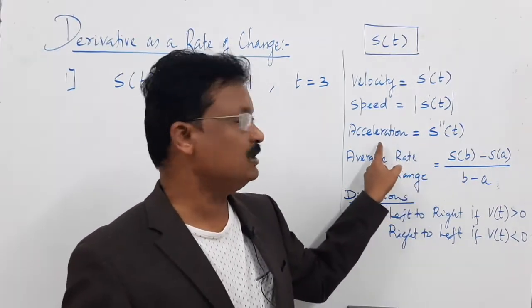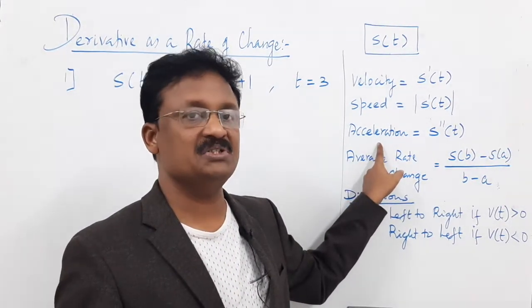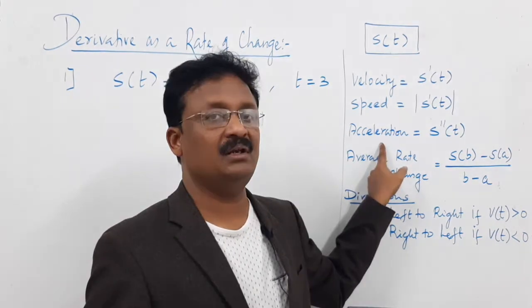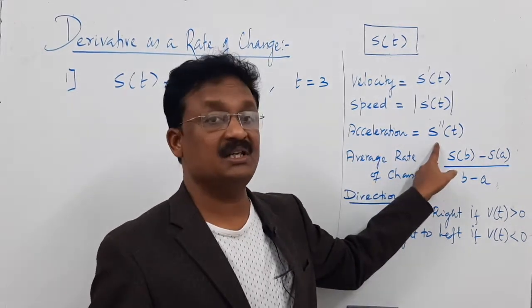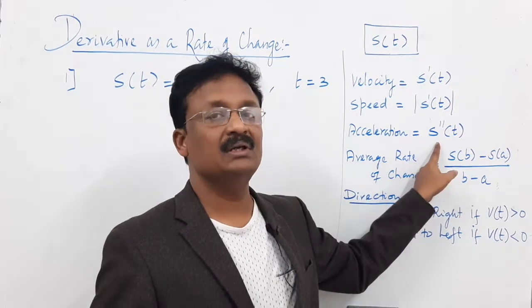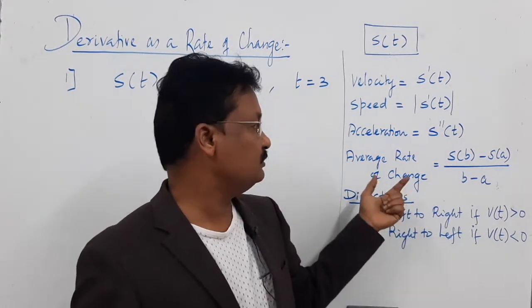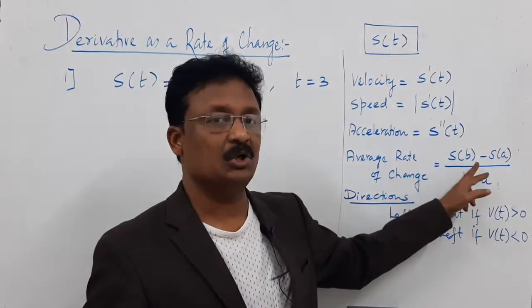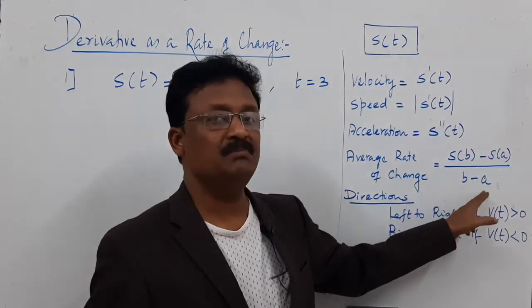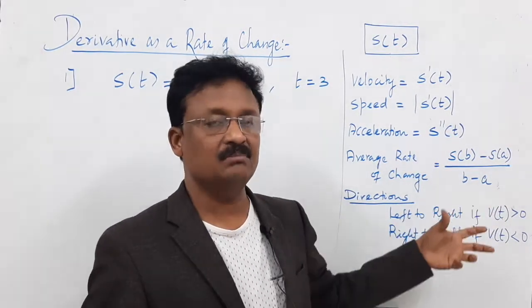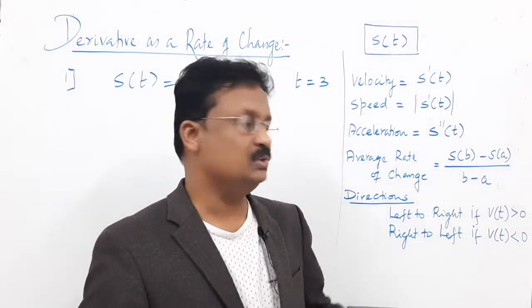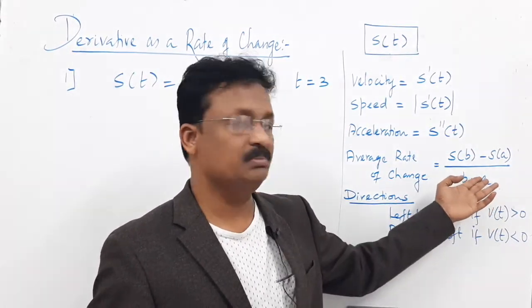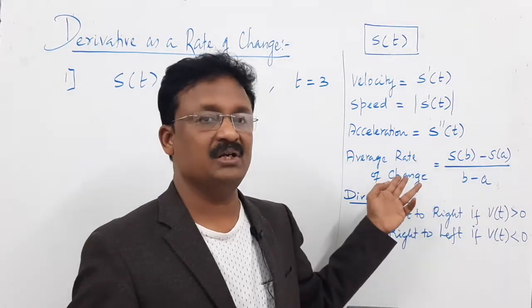The third keyword is acceleration. To find acceleration, take s double dash — the second derivative of s of t. The fourth keyword is average rate of change: it equals [s(b) minus s(a)] divided by [b minus a], where a and b are the given interval. Apply a and b in the function s of t, simplify, and you get the average rate of change.